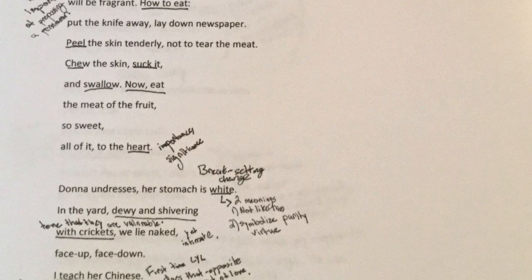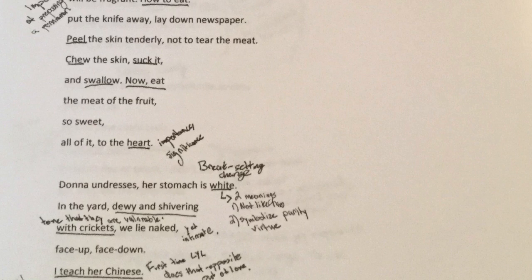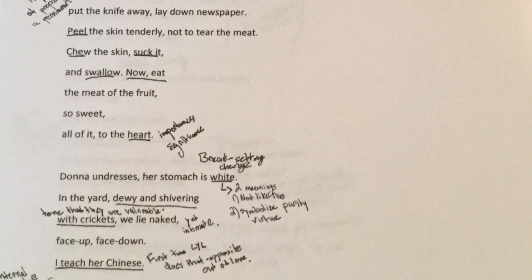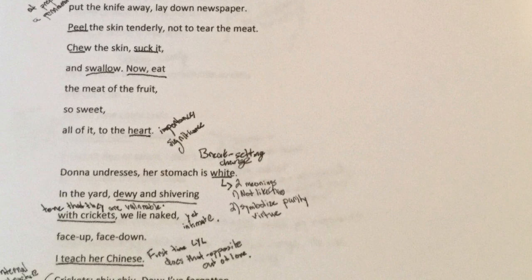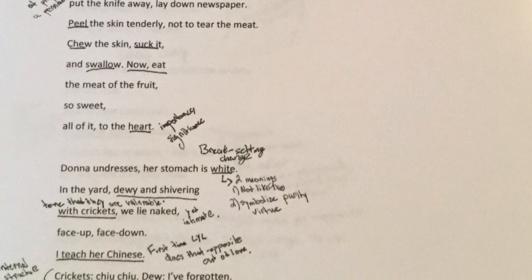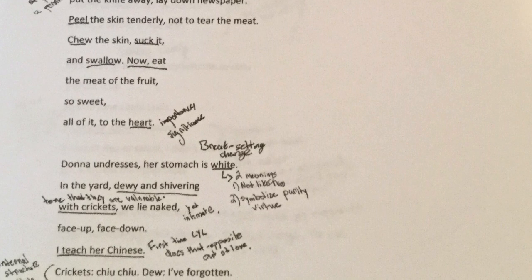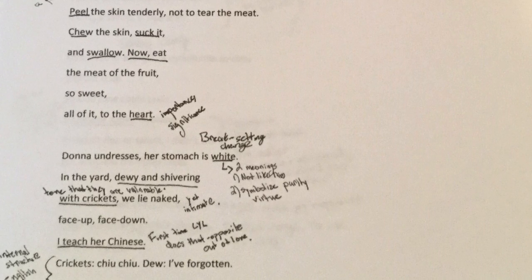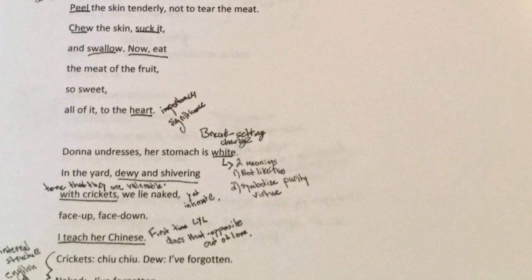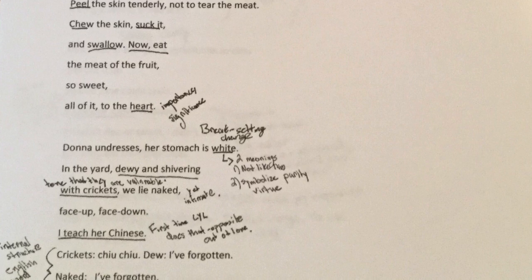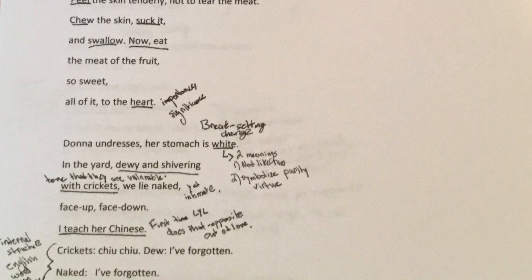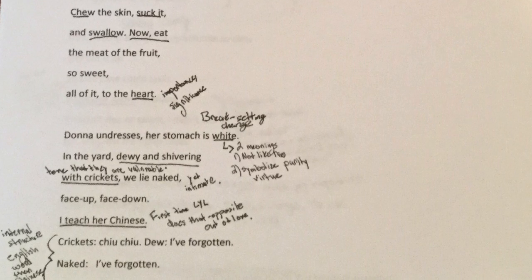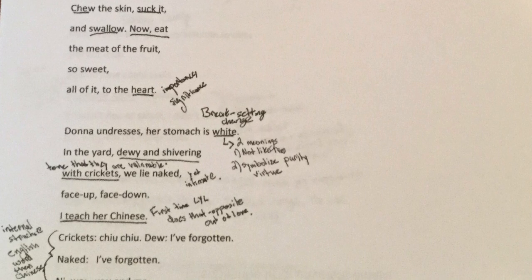Then there is a break, and the next stanza is a setting change — he is with his wife, Donna. Describing her stomach as white has a couple of implications: first, it shows that she is unlike him in terms of him being an immigrant from outside of a white country like the United States, perhaps showing the contrast to people like Mrs. Walker, and how he is able to have understanding between himself and Donna simply because of the love they share. It could also symbolize the purity or virtue that exists within his wife. The description of the yard as dewy and shivering with the crickets makes it appear as if they are vulnerable, but that vulnerability is overcome through the intimate love that exists between them.